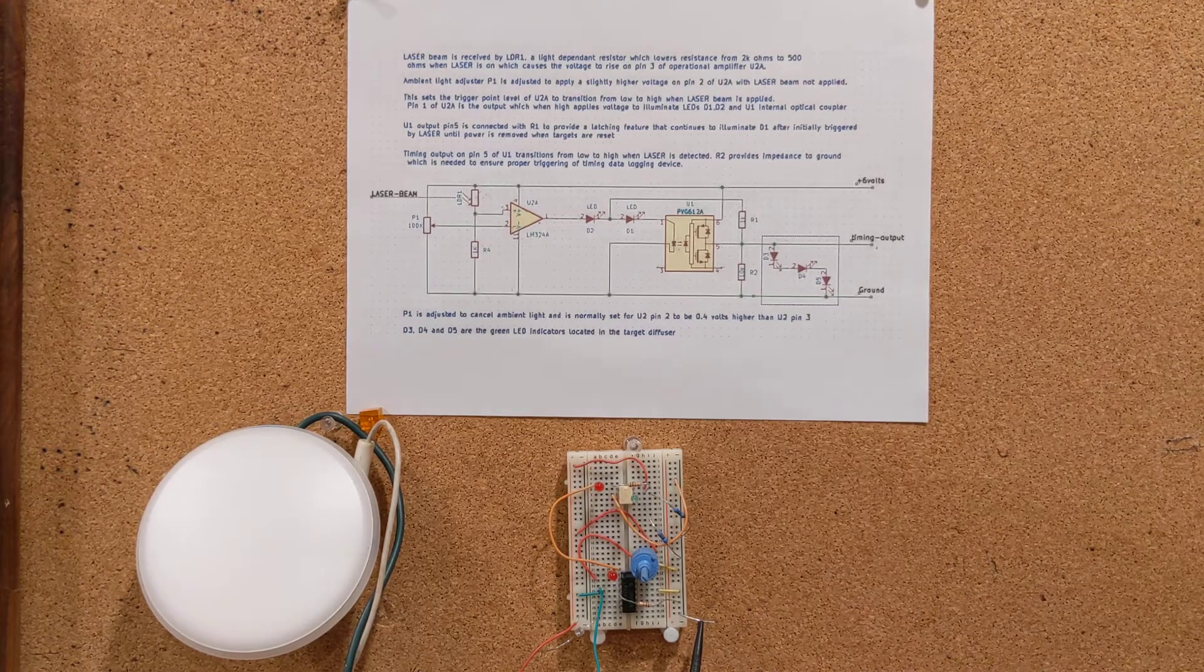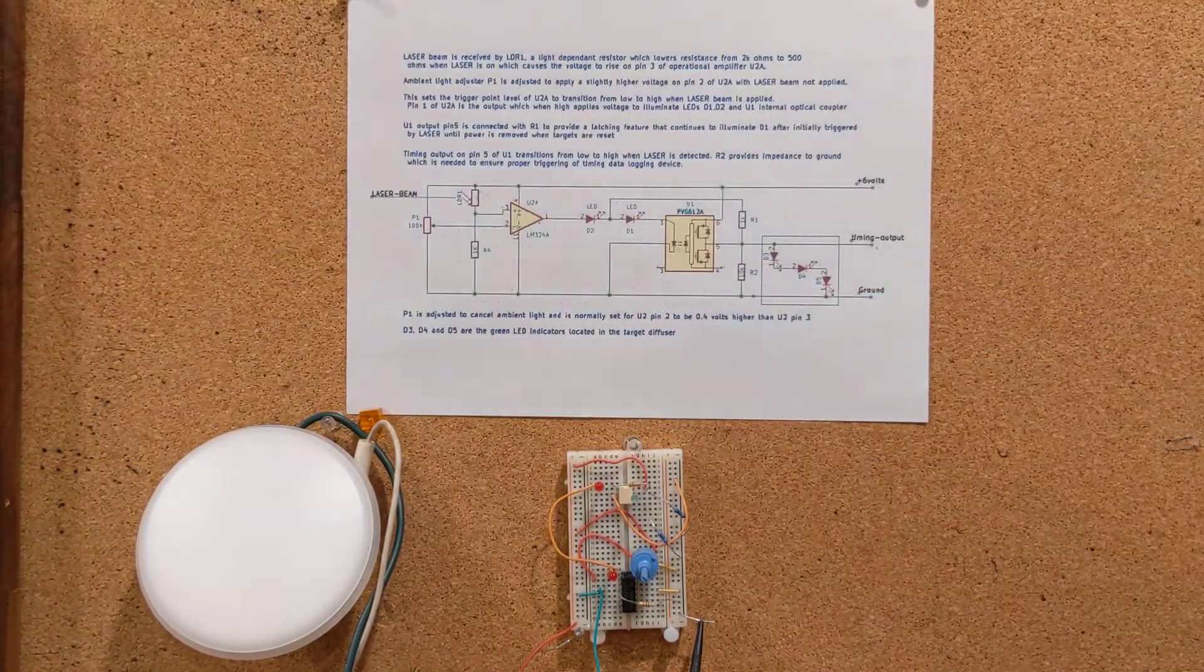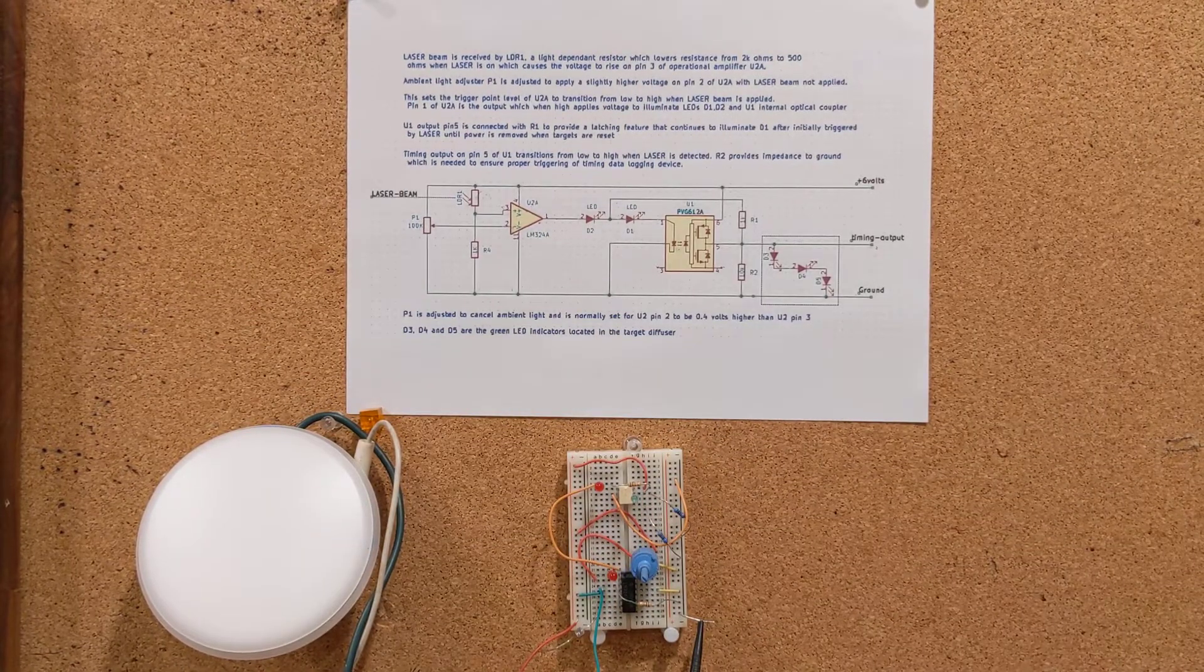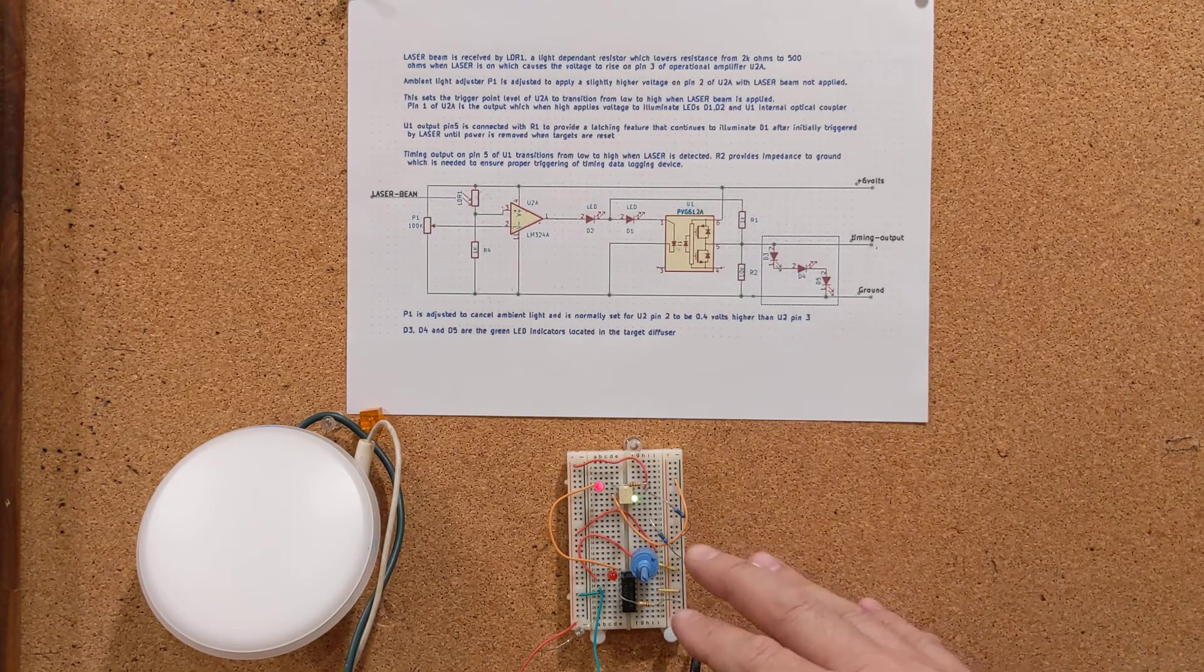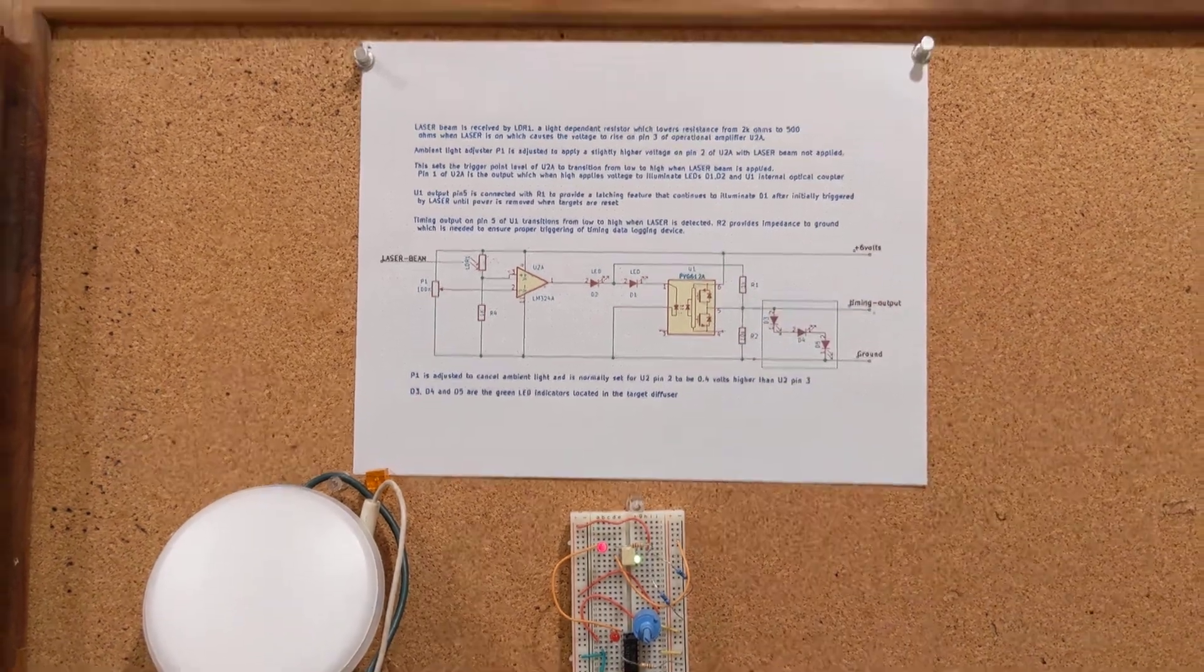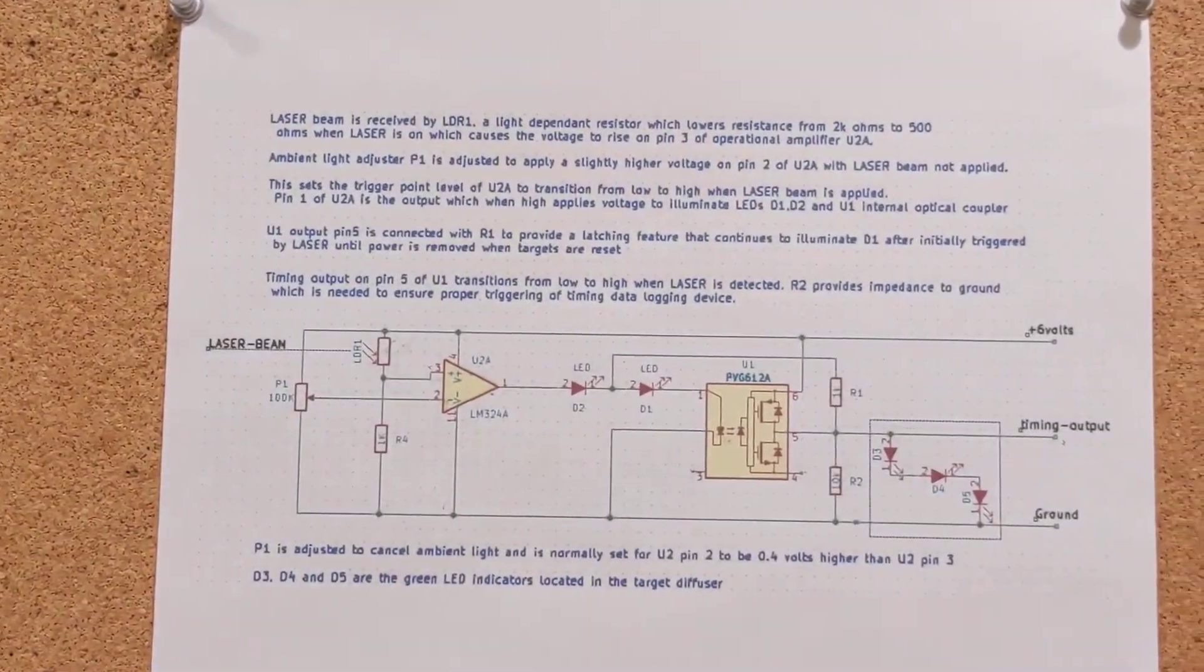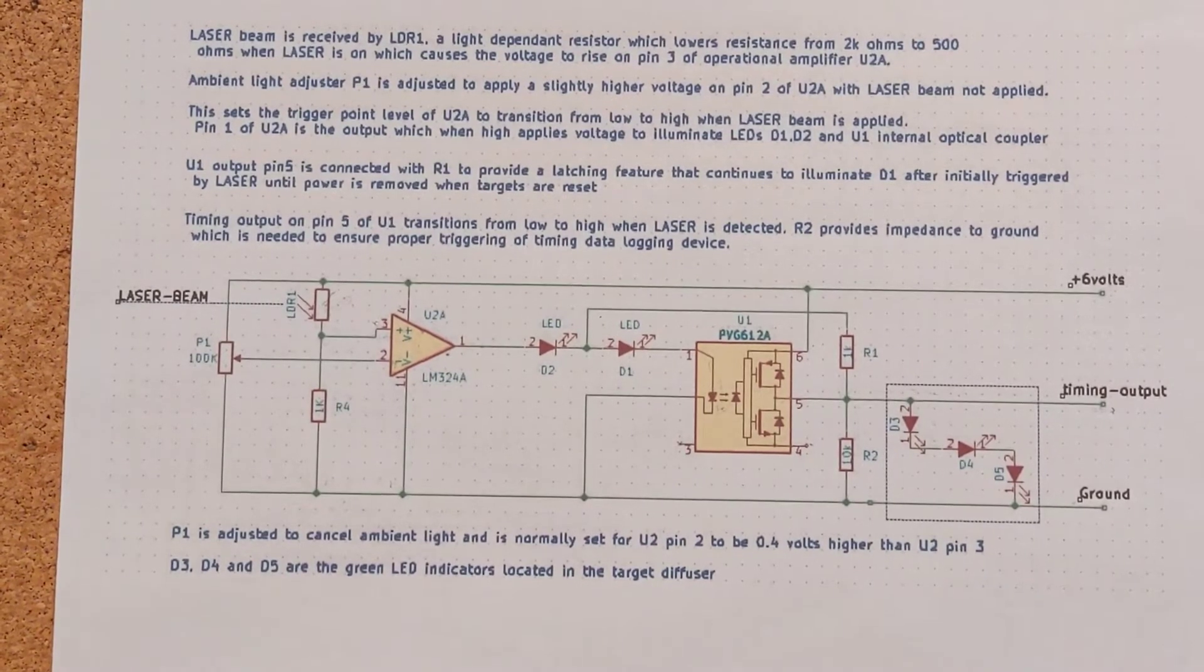In past videos I've shown how to convert a pistol to shoot a laser burst, did a video on how to make the diffuser target assembly, and another video showing how the circuit functions. Now I'm going to go into details of the schematic itself in case someone's interested in helping to develop it or has any suggestions on how it might be improved.